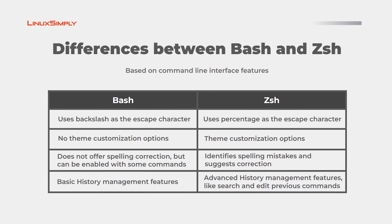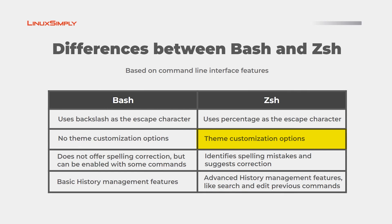Next, I will be differentiating them based on command-line interface features. Bash uses the backslash as an escape character, whereas ZSH uses the percentage. Theme customization is not available in Bash, whereas you can customize themes in ZSH. Spelling correction, an important feature, is not supported in Bash, whereas ZSH identifies spelling mistakes and suggests corrections. Basic history management features are available in Bash, whereas in ZSH the history management features are more advanced, like searching and editing previous commands that were used.